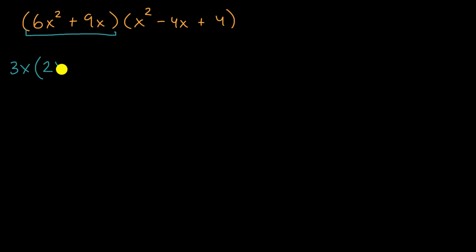And then 3x times what is 9x? Well, 3x times three is 9x. And you can verify that if we were to distribute this 3x, you would get 6x² + 9x. And then what about this second expression right over here? Can we factor this?